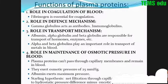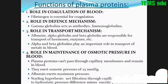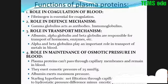Role in transport: alpha globulin and beta globulin are responsible for transport of hormones, enzymes, metals in blood. Role in osmotic pressure: plasma proteins cannot pass through the capillary membrane and remain in blood; they exert an osmotic pressure of 25 mmHg. Albumin exerts maximum pressure.